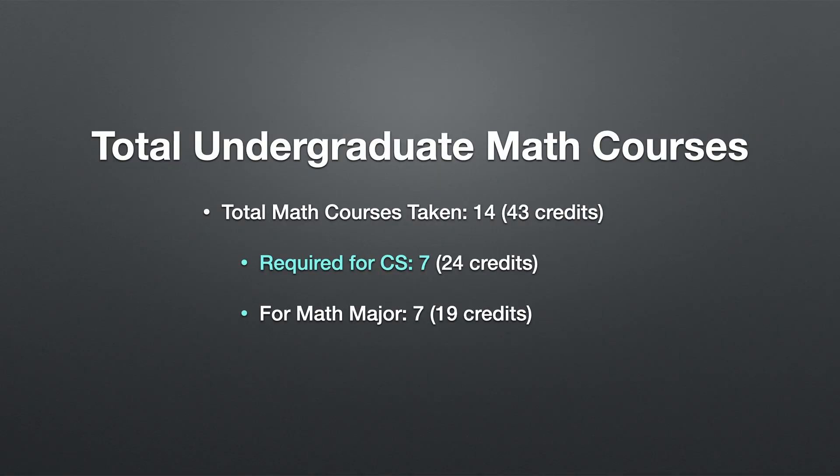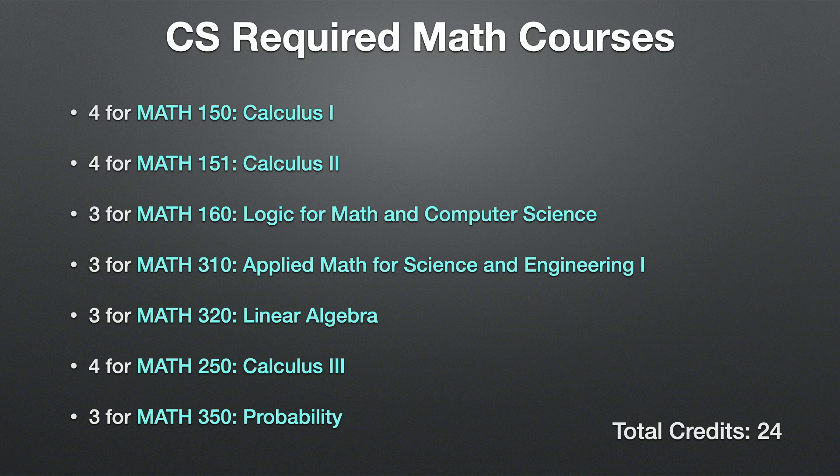Now let's take a look at the mathematics courses I took in college. The total undergraduate mathematics courses I took was 14 courses, which equated to 43 credits. Seven courses were required for the computer science major. The CS-required math courses include calculus 1, calculus 2, logic for math and computer science, applied math for science and engineering 1, linear algebra, calculus 3, and probability.